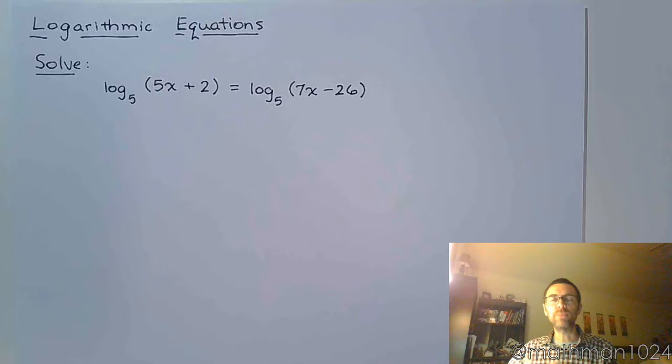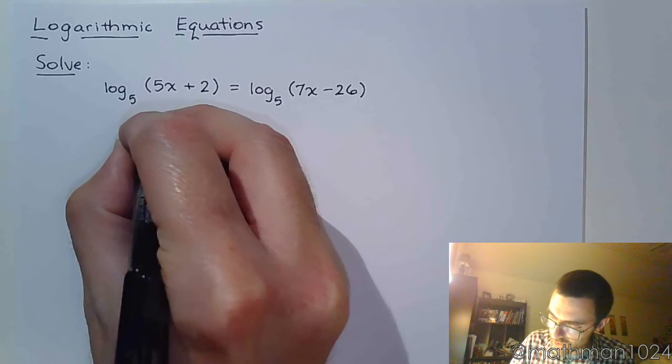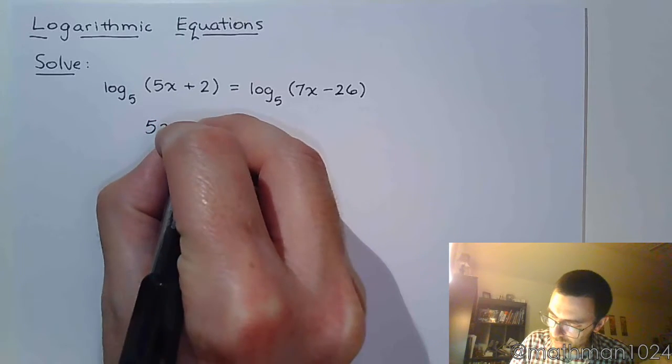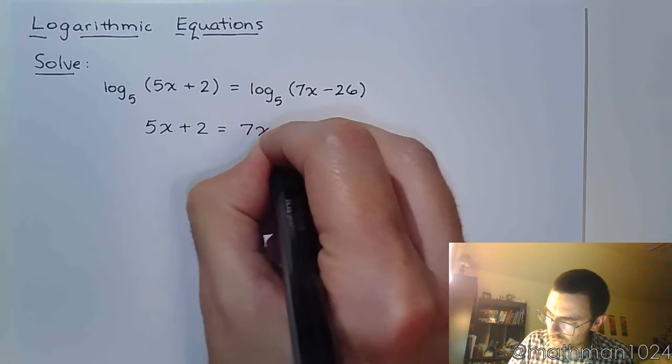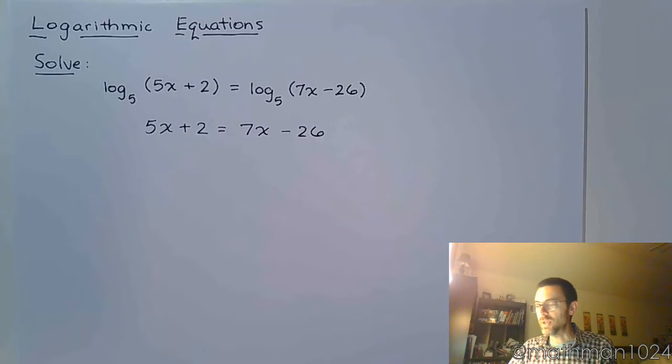So in order for these two logs to be equal, the expressions inside have to be equal. It's all part of that thing that the logarithms are one-to-one functions. So that means from here we can just say that 5x plus 2 equals 7x minus 26.